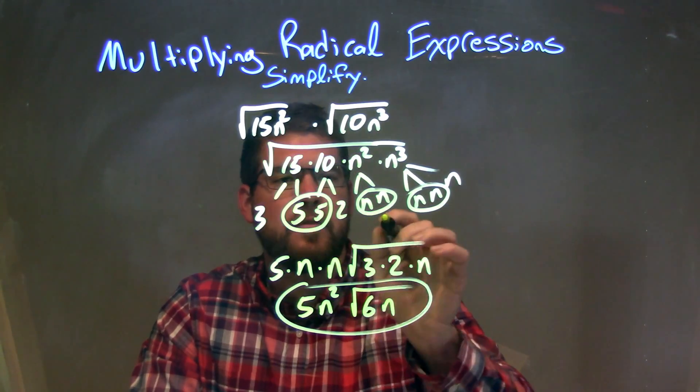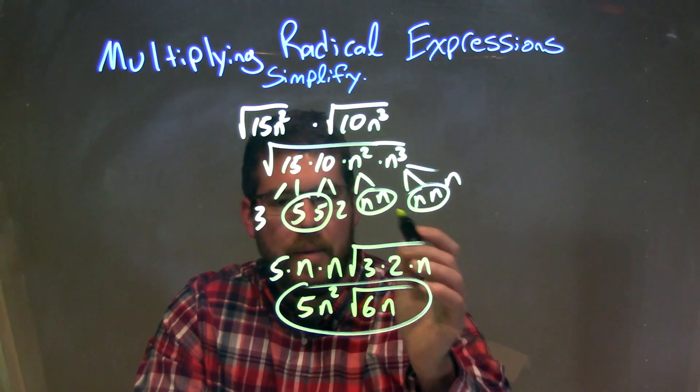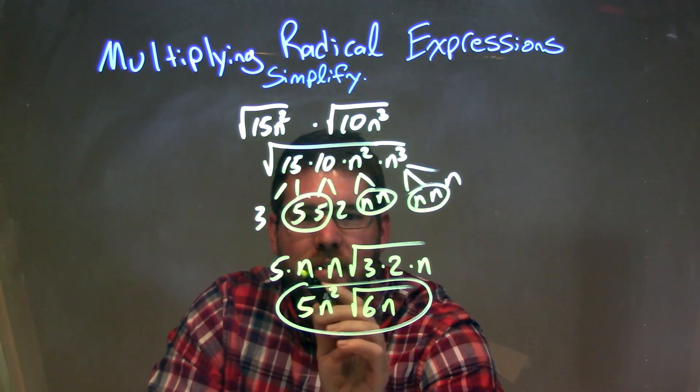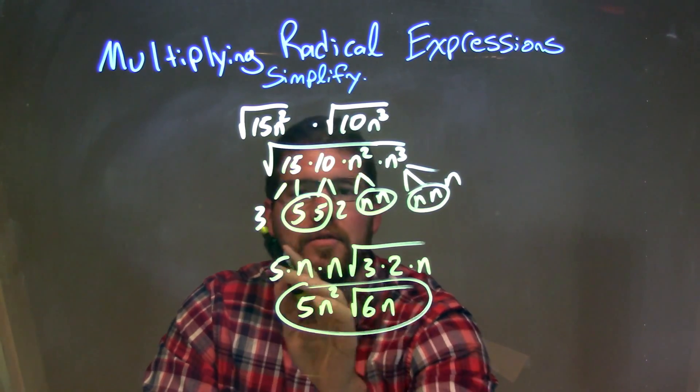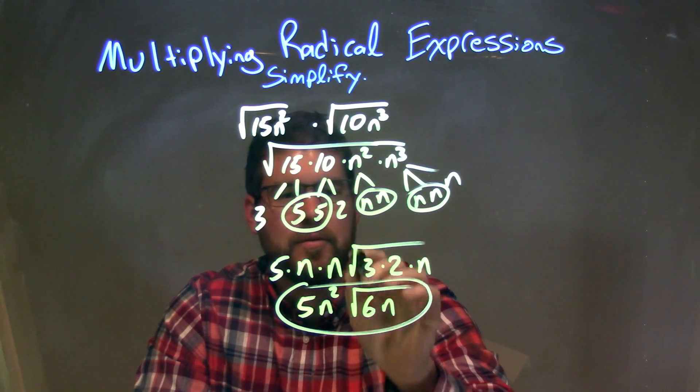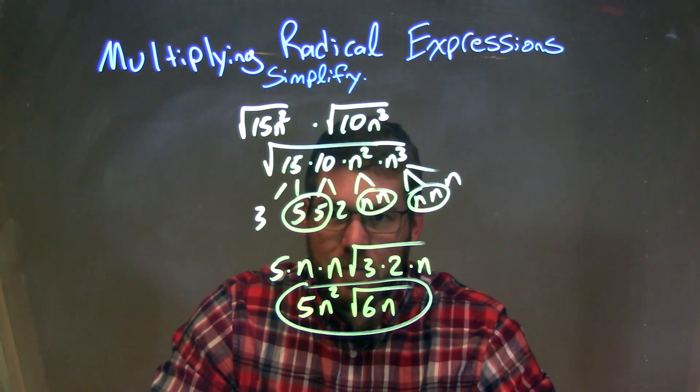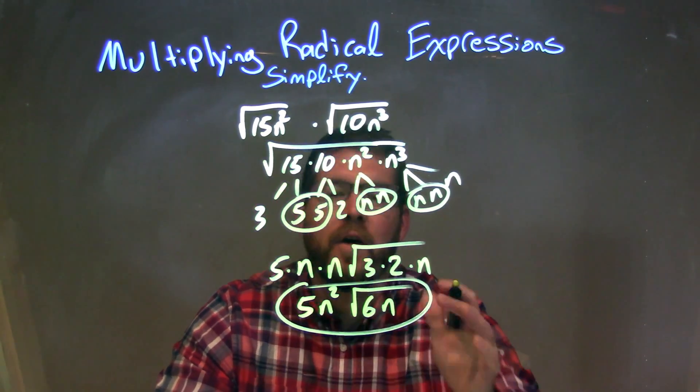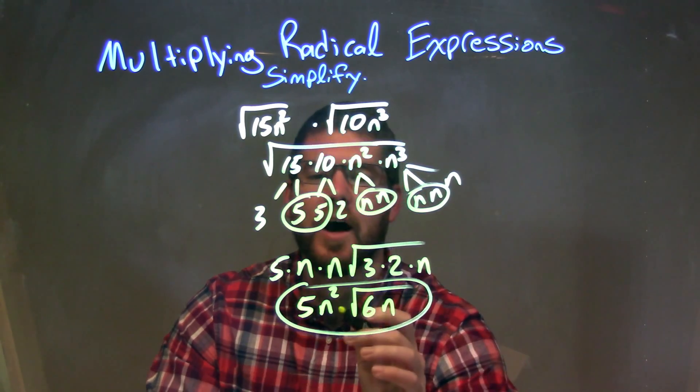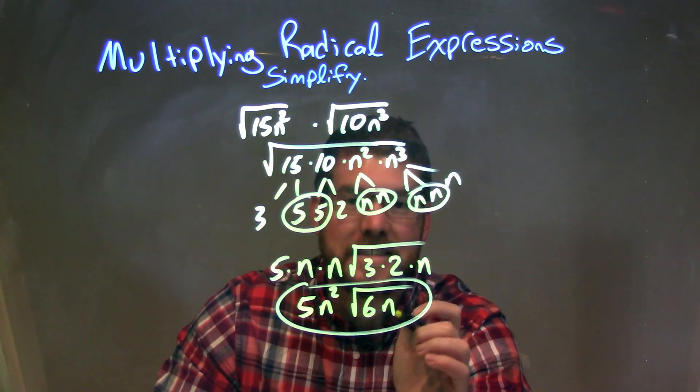We circled our pairs: a pair of 5s, a pair of n's, and another pair of n's. The pairs represented a single on the outside: 5, n, and n. All the singles are left on the inside: the square root of 3 times 2 times n. We simplified that to get our final answer of 5n squared times the square root of 6n.